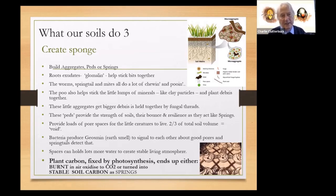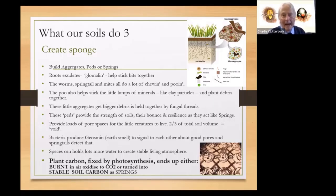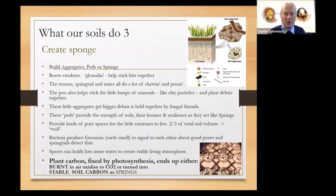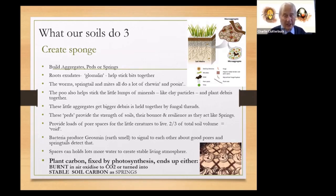While the worms, springtails, and mites are doing a lot of eating and pooing, that poo also helps stick the minerals together. The first mineral to be stuck together is the clay particles — the smallest of the lot. Then they're made into bigger clumps when fungal filaments start wrapping them up, forming micro-aggregates and macro-aggregates. These provide strength in the soil but also resilience. When you run on concrete there's no give, tarmac gives a bit, but on country ground you can feel it almost bouncing — these aggregates have the capacity for both strong structure and a spring-like resilience.